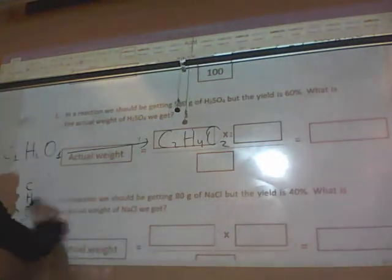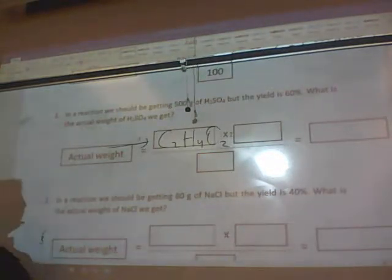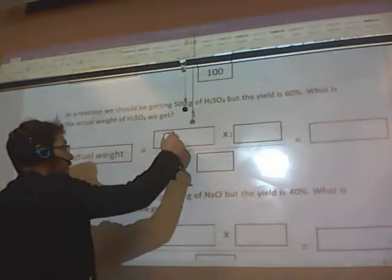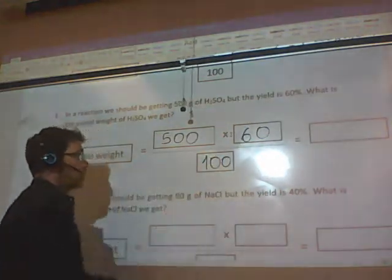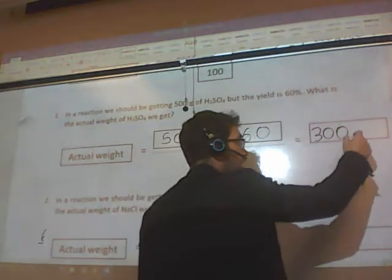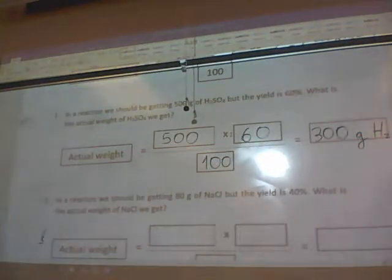In our reaction you should be getting 500 grams of sulfuric acid, but the yield is 60%. What is the actual weight of sulfuric acid? So the only thing you've got to do is 500 times 60 divided by 100. That should be 300. It's important to write the units: 300 grams of sulfuric acid.